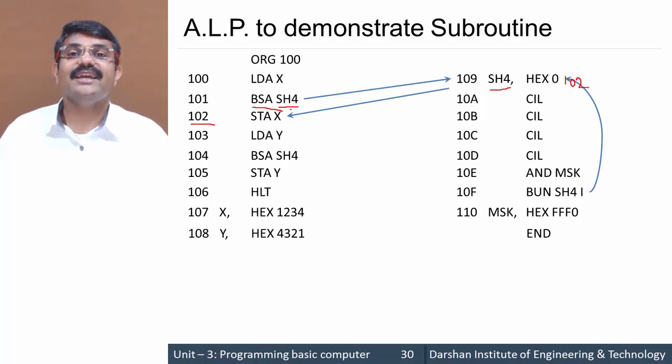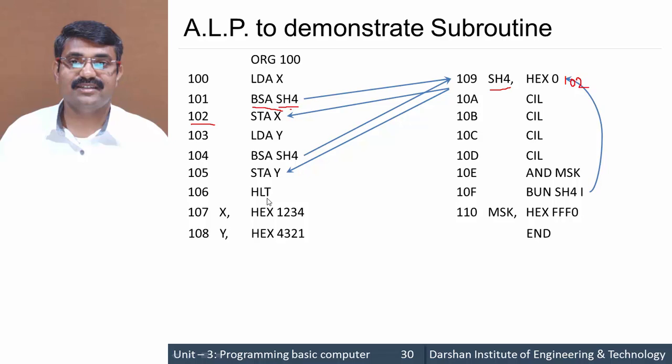Moving further, we have written BSA SH4 once again. It jumps to the subroutine, and return address 105 is stored. The subroutine executes again, then BUN indirect SH4 returns to address 105, and our program halts.